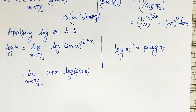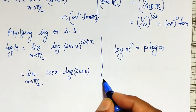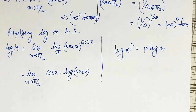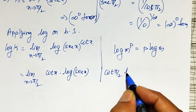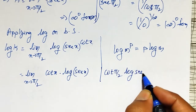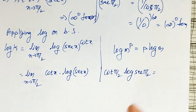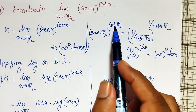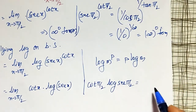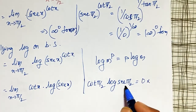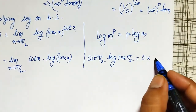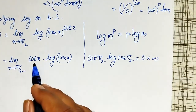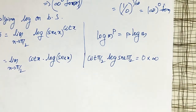After applying this log property, let me check which form I am going to get. Substituting x = pi/2: cot(pi/2) into log of secant(pi/2). Cot(pi/2) = 1 by infinity = 0, and log of secant(pi/2) = log of infinity = infinity. So I am going to get the 0 into infinity form.